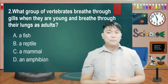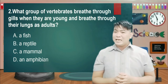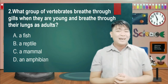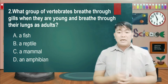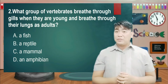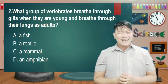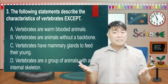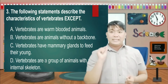Number 2: What group of vertebrates breathe through gills when they are young and breathe through their lungs as adults? A. Fish. B. Reptile. C. Mammal. Or D. Amphibian. And the answer is... Letter D.